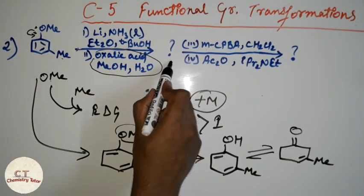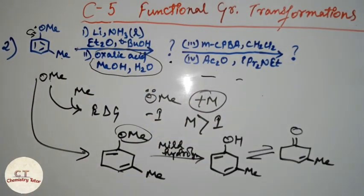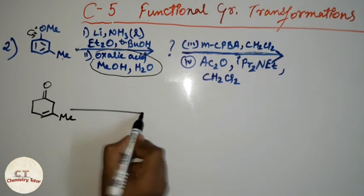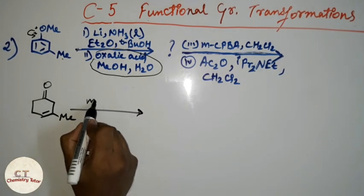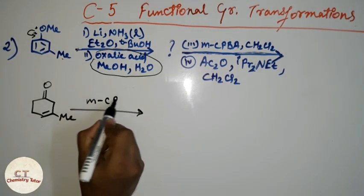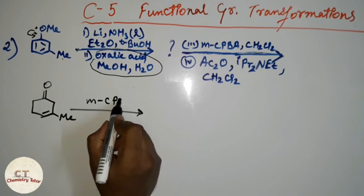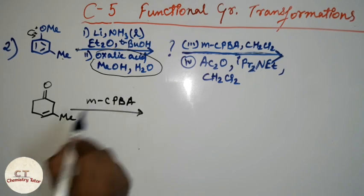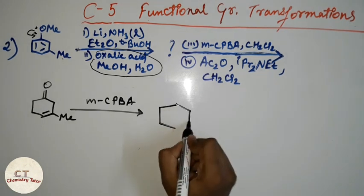This is the product formed in that step. Now in the next step, MCPBA is given along with dichloromethane. The role of MCPBA here is to convert the double bond into an epoxide.